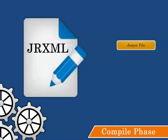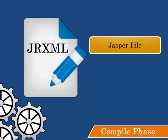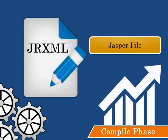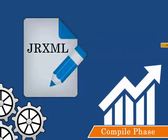In the second step, the JR XML is compiled into a binary object called a Jasper file. The compilation of the report is done for performance reasons.